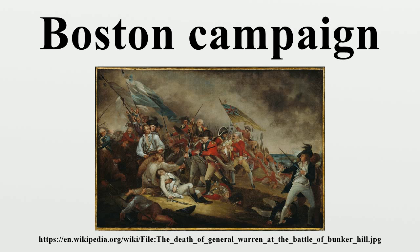On the night of April 18, 1775, General Gage sent 700 men to seize munitions stored by the colonial militia at Concord. Several riders, including Paul Revere, alerted the countryside, and when the British troops entered Lexington on the morning of April 19, they found 77 minutemen formed up on the village common. Shots were exchanged, eight minutemen were killed, the outnumbered colonial militia dispersed, and the British moved on to Concord.